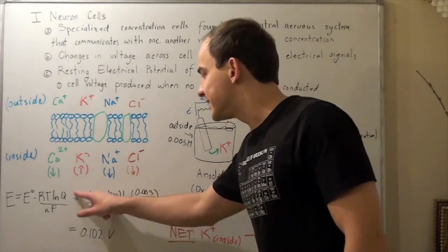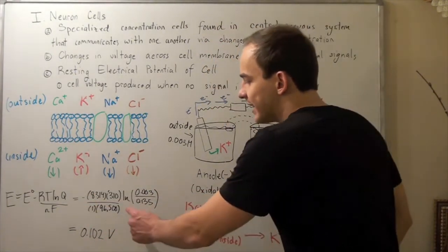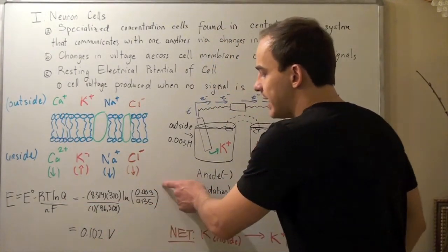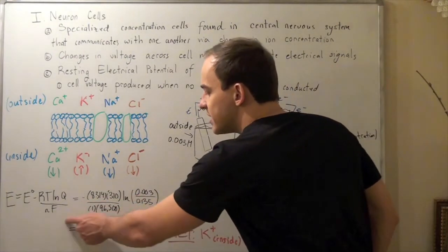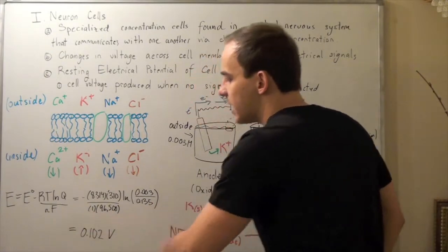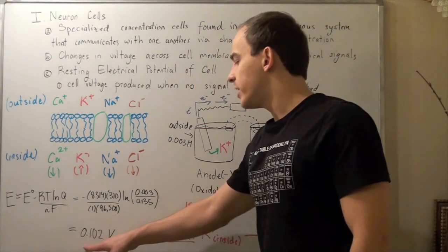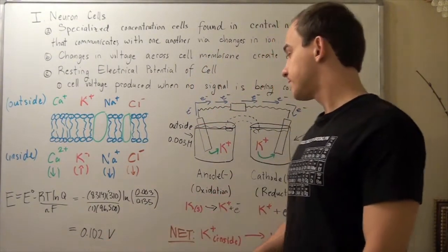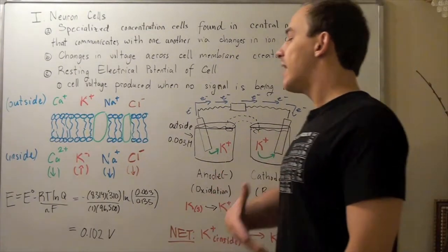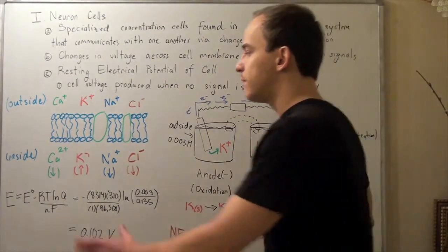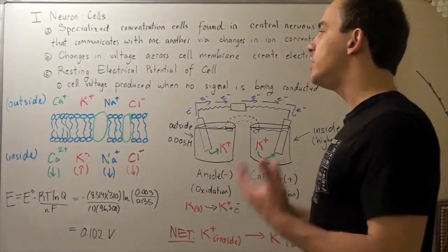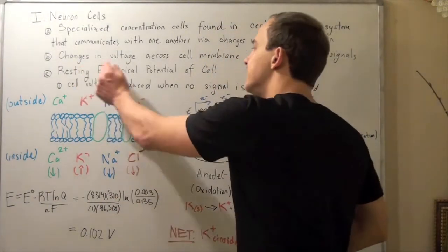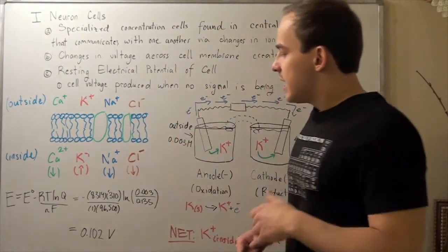We plug these guys into the calculator. Notice that natural log of a number smaller than 1 gives you a negative number. So the negatives become a positive. And this is our final cell voltage, 0.102 volts. So then we do the same exact thing for calcium, for sodium, and for chloride. Add all the guys up and we should get our final resting electrical potential in the cell.